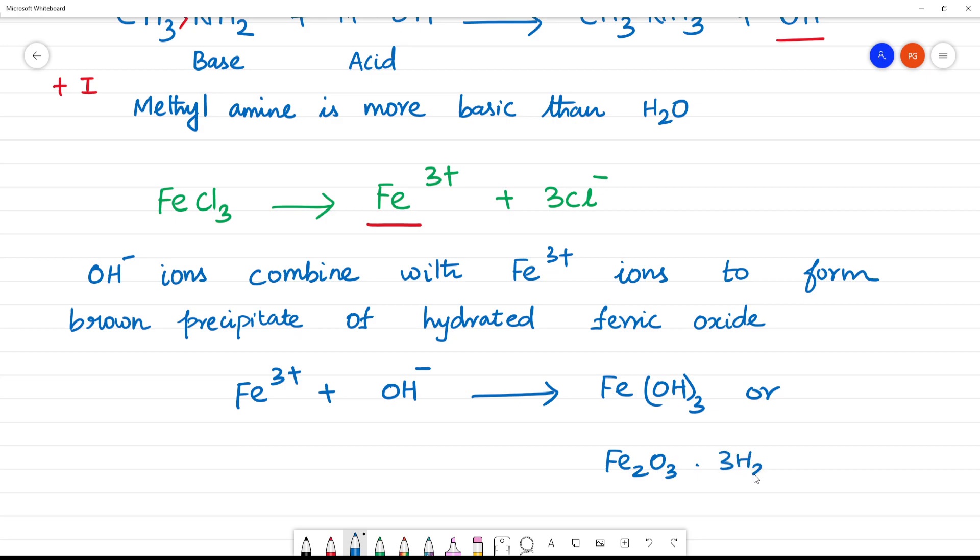Fe2O3.3H2O. We have to balance it. So here 2 comes, here 6 comes, here 2. So 2Fe, 2Fe, 6 hydrogen. Here 6 hydrogen, here 2, 3s are 6 hydrogen. 6 oxygen, 6 oxygen. This is the precipitate, brown precipitate.